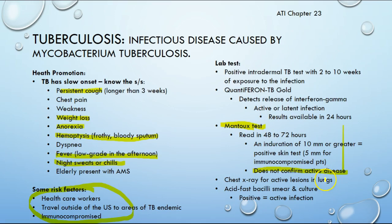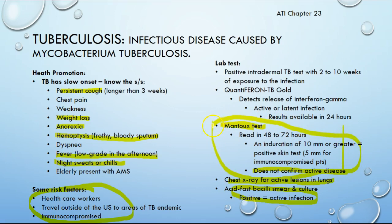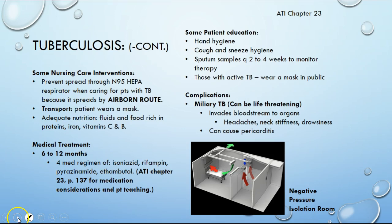A chest X-ray can look for active lesions in the lungs. The acid-fast bacillus smear and culture — if positive — can indicate an active infection. The QuantiFERON-TB Gold test can show either active or latent infection. For practical purposes, the most important test to know is the Mantoux test, as you may need to administer it in a clinic setting and know what is considered a positive result.